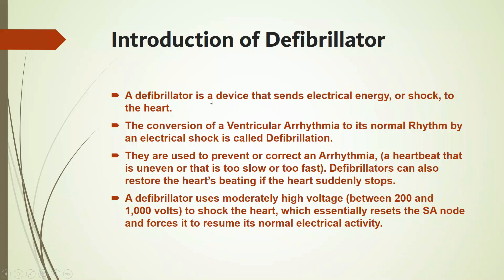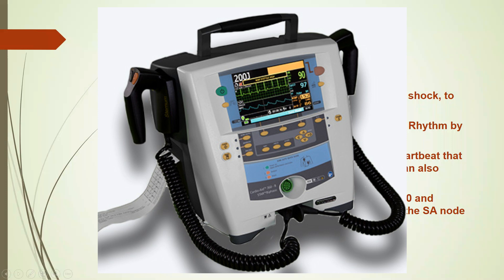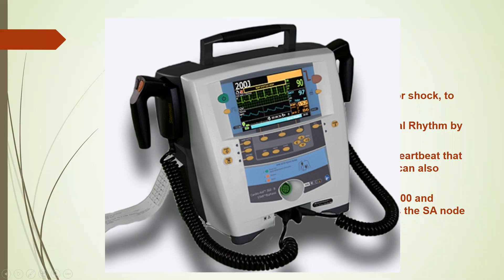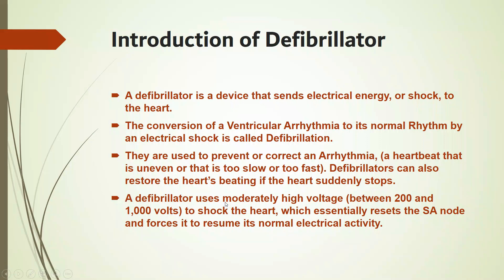A defibrillator is a device that sends electrical energy or shock to the heart. The conversion of a ventricular arrhythmia to a normal rhythm by an electrical shock is called defibrillation. They are used to prevent or correct an arrhythmia — a heartbeat that is uneven, too slow, or too fast. A defibrillator can also restore the heartbeat if the heart suddenly stops. Defibrillators use high voltage between 200 and 1000 volts to shock the heart, essentially resetting the SA node and forcing it to resume normal electrical activity.